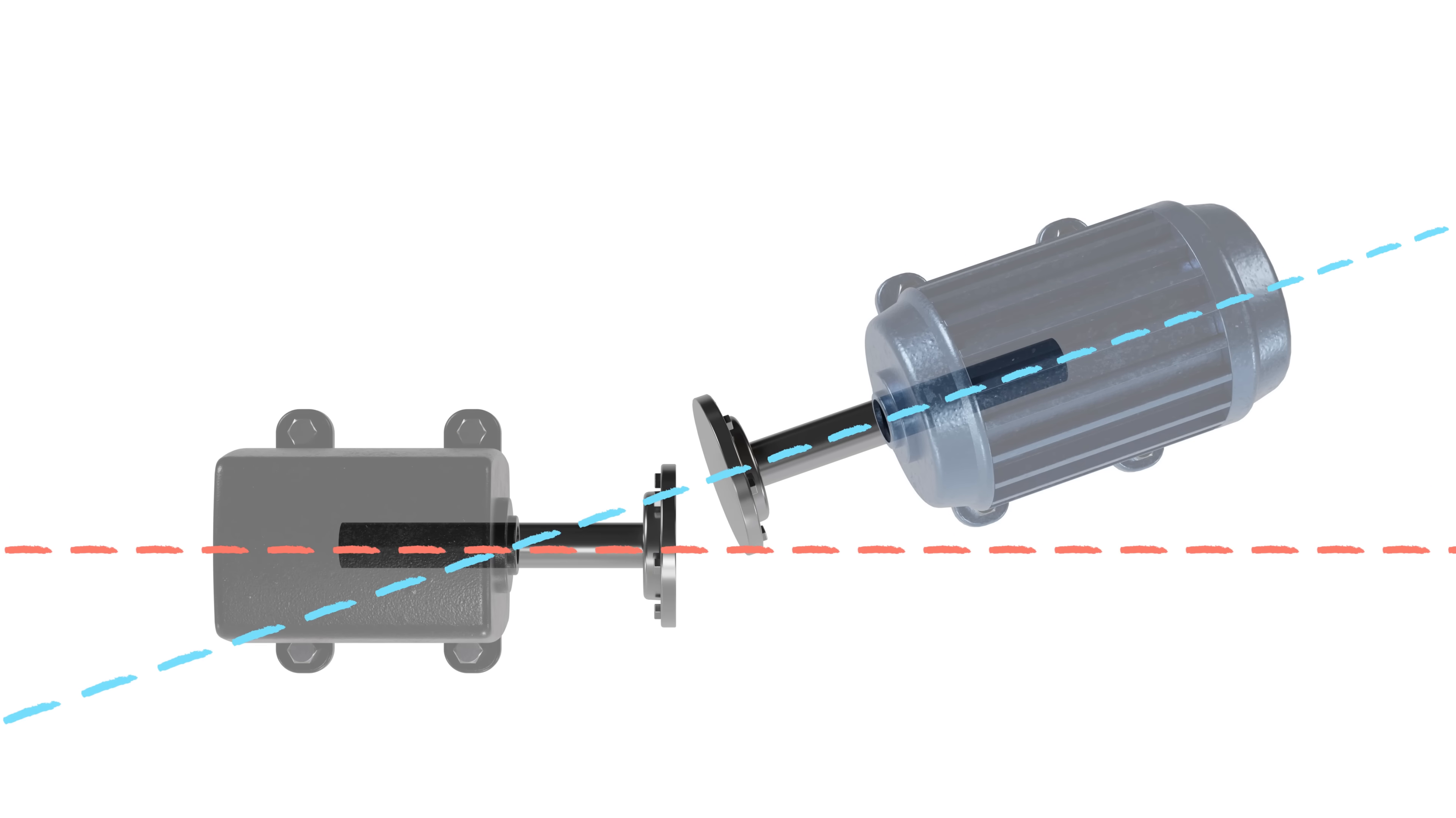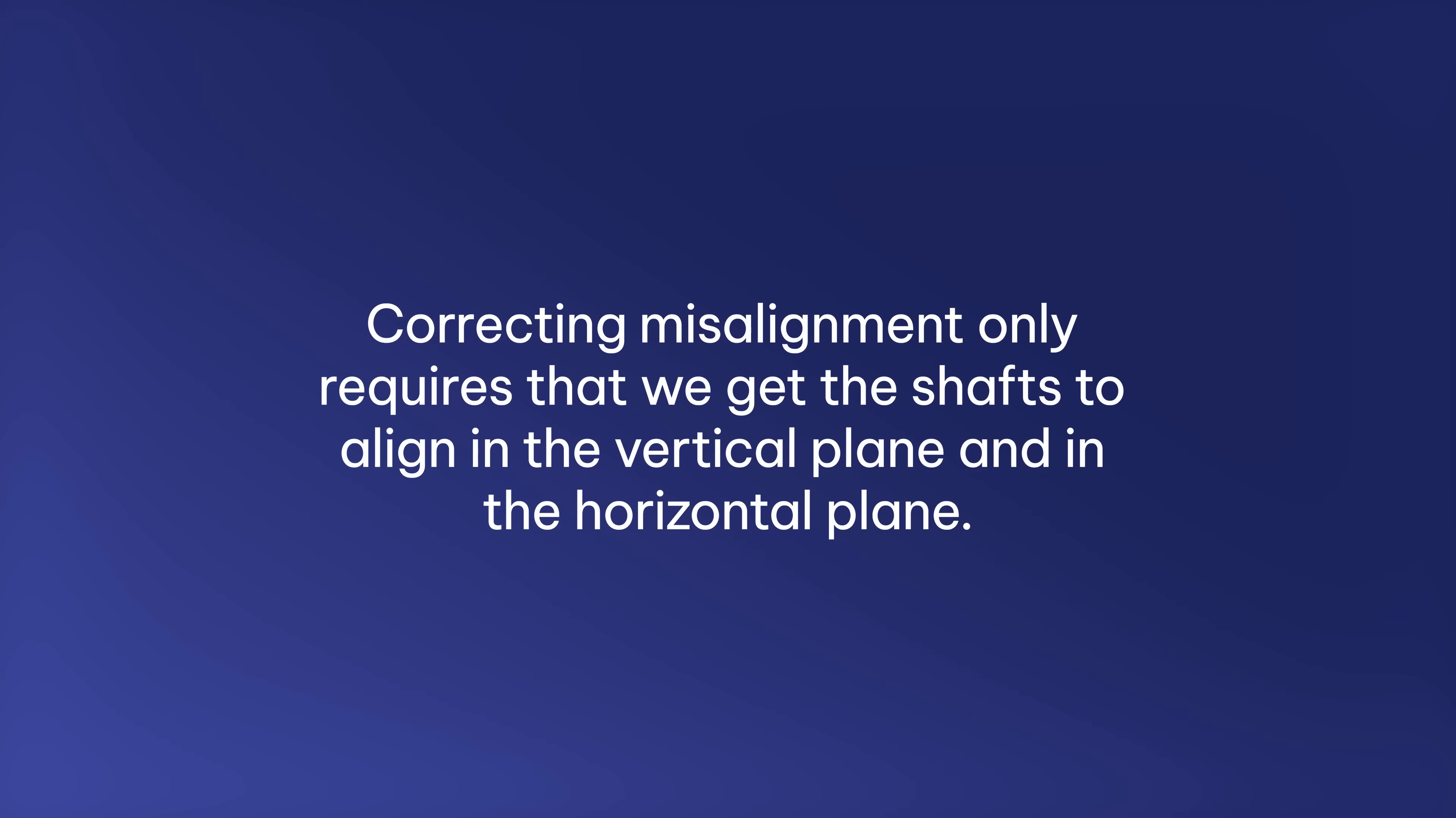While it is much easier to understand misalignment if you can visualize it in three-dimensional space, correcting misalignment only requires that we get the shafts to align in the vertical plane and in the horizontal plane.